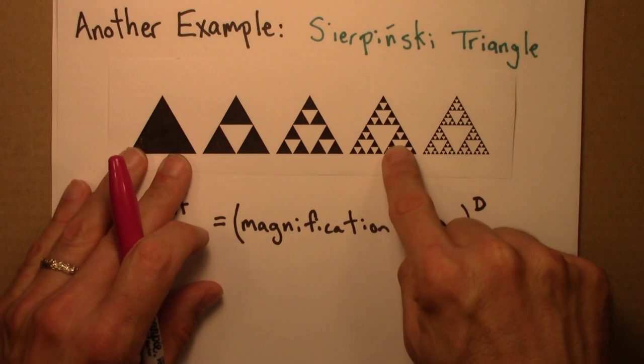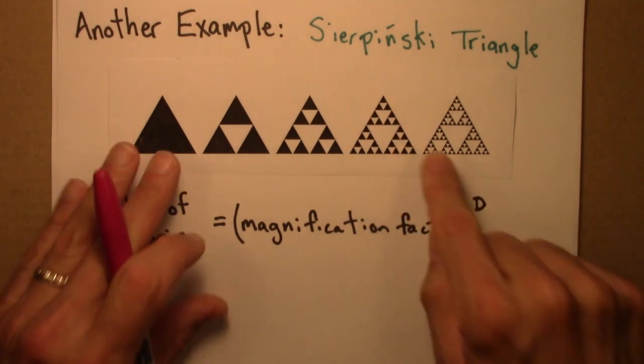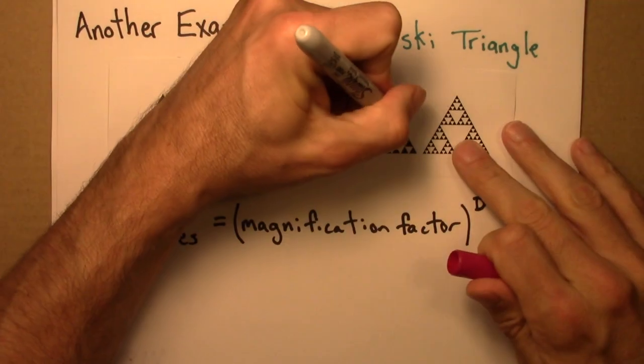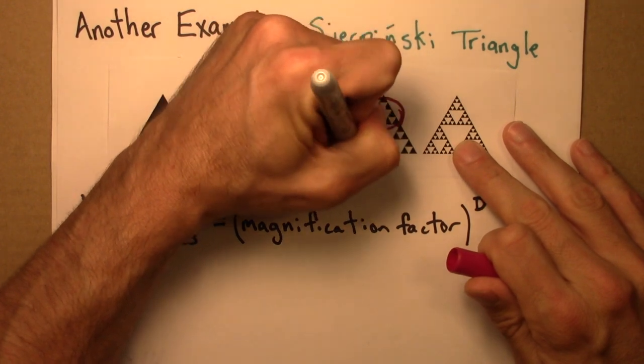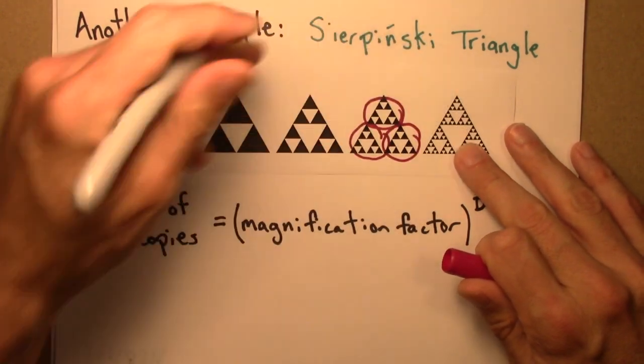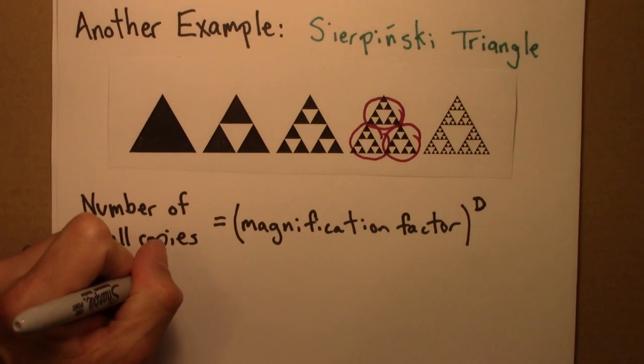I guess I'll look at this version of it and I see one, two, three small copies. One, two, three. So the number of small copies is three.